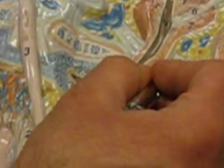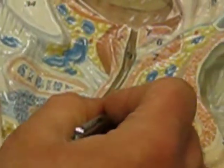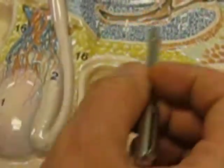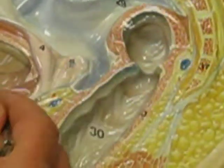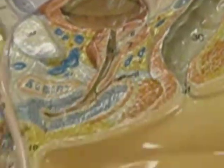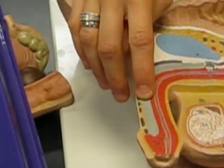But this one does have the bulbourethral gland there, and that's about five percent of the semen. So about five percent from there, about five percent from here, about sixty percent from here, and about thirty percent from there. There's your hundred percent and all the cells are coming from the testes.